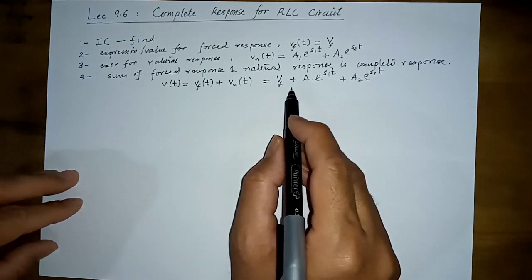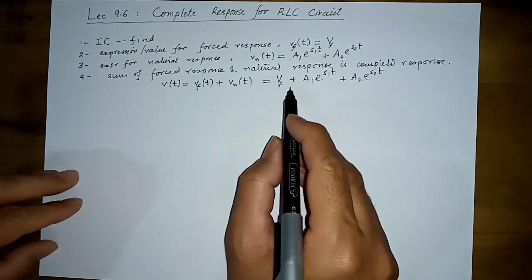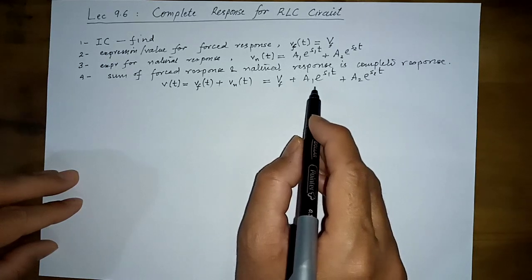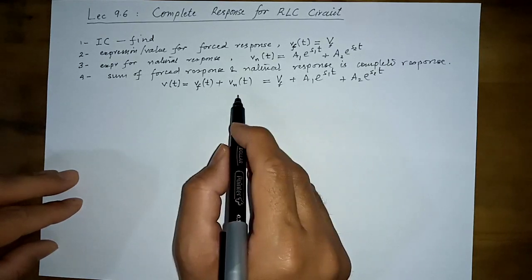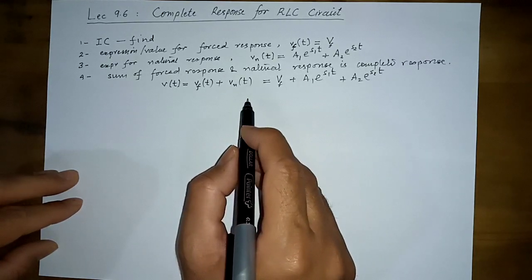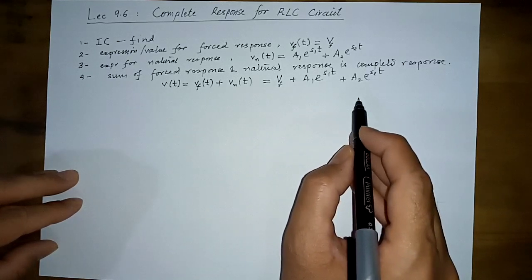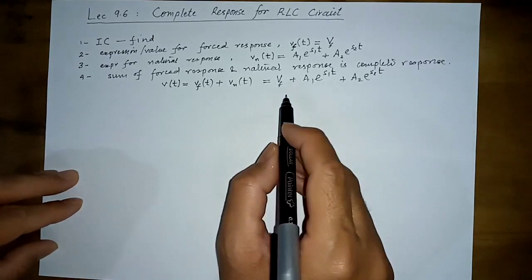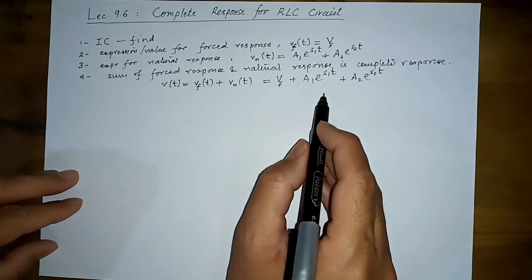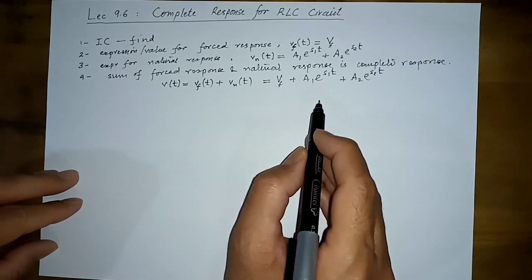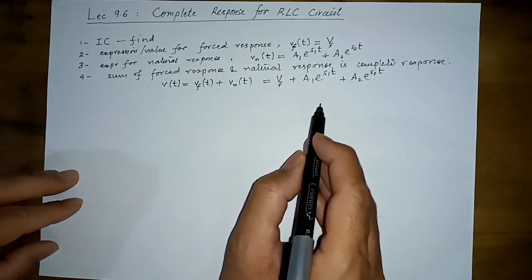A circuit with sources will also have an alpha computed in the same way. For a parallel RLC circuit, alpha equals 1 over 2RC, and for a series RLC circuit, alpha equals R over 2L.